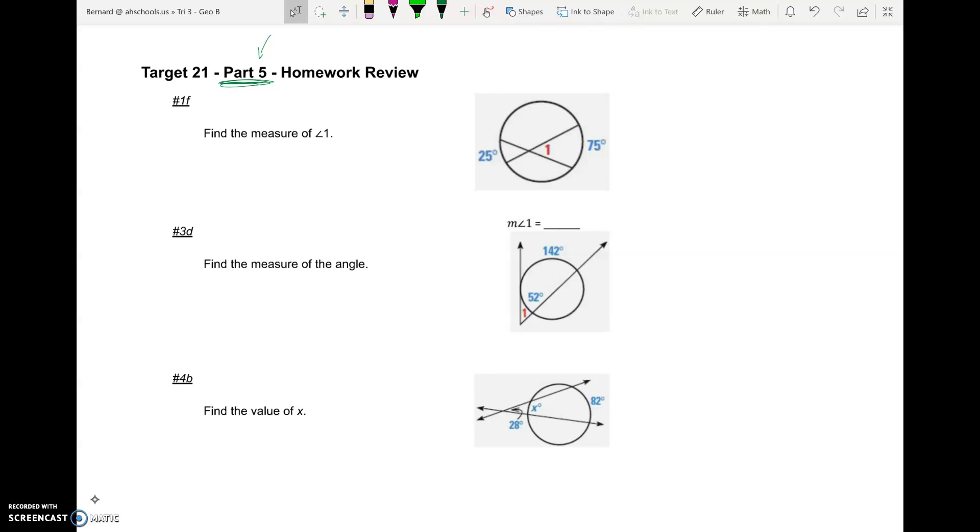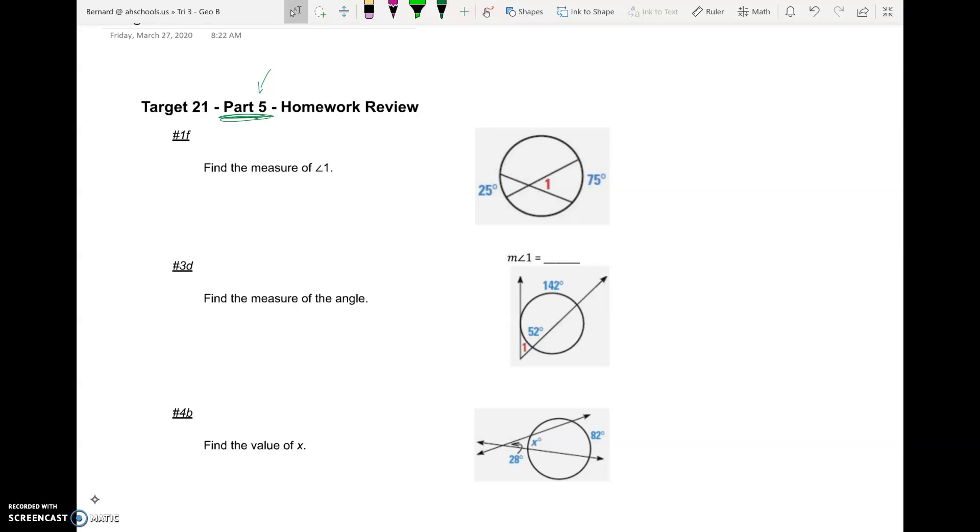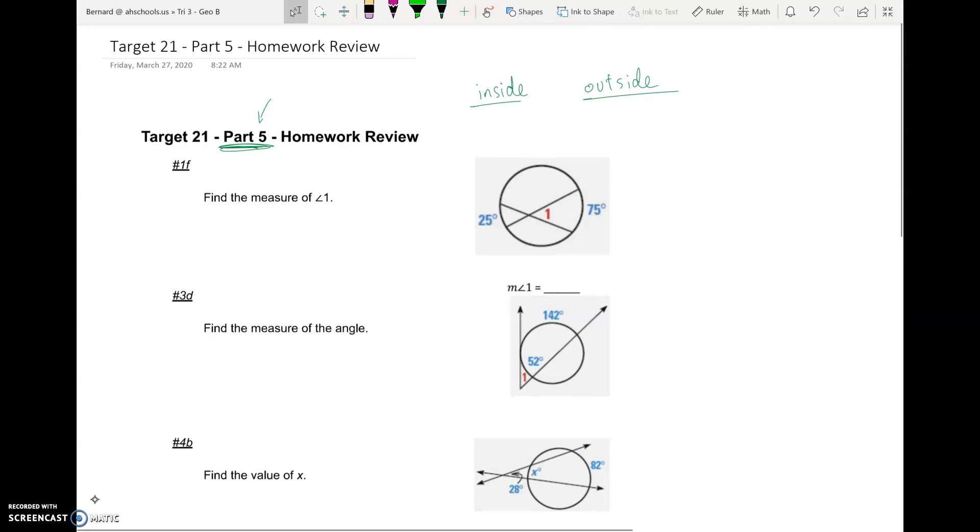And so I picked three problems that really highlight the skills that we introduced during the Part 5 notes. Again that was Target 21 and that deals with angles on, inside, and outside of our circle. And we really in Part 5 focused on inside and outside. Let me move that a little farther away. We'll do a little bit of review here.